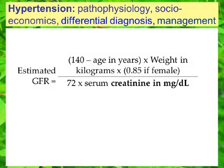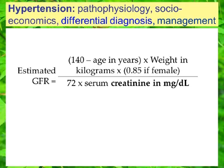This slide shows the Cockroft-Gault equation, which is factored primarily by the patient's age in years, weight in kilograms, and gender, divided by their serum creatinine. The complete equation is: 140 minus age in years, times weight in kilograms, times 0.85 if the patient is female — divided by 72 times the serum creatinine level in milligrams per deciliter.